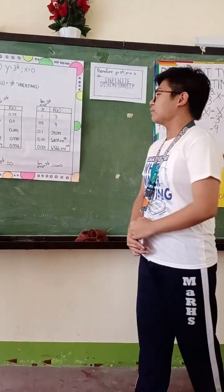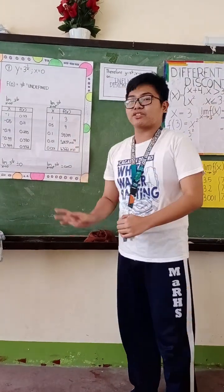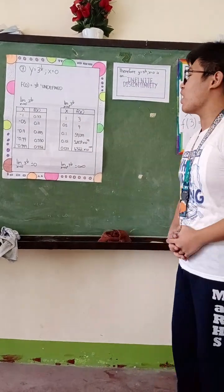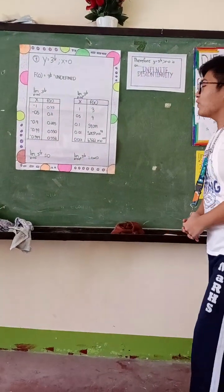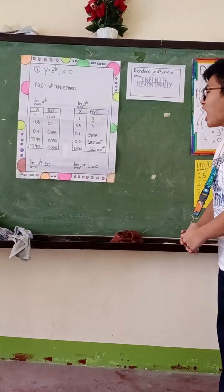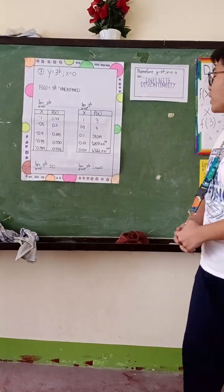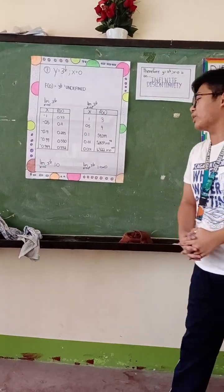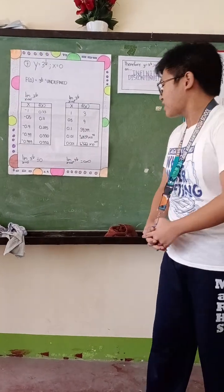If x is 1, the limit of the function 3 raised to 1 over x gives f(x) = 3. If x is 0.5, f(x) = 9. If x is 0.1, f(x) = 59,049. If x is 0.01, f(x) = 5.1537 × 10 raised to 48. If x is 0.001, f(x) = 1.322 × 10 raised to 477.